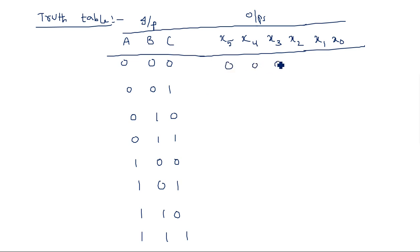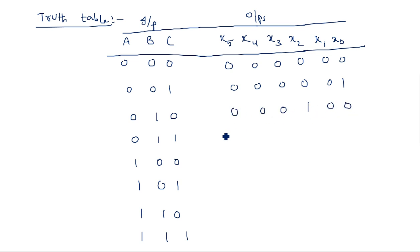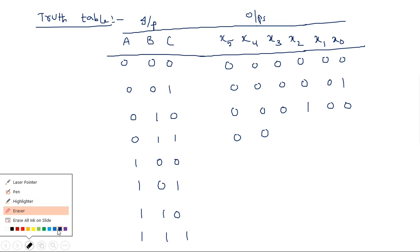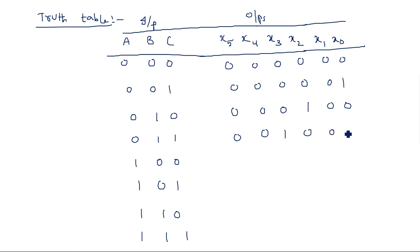0 squared is 0, so all output bits are 0. 1 squared is 1, so the output is 000001. 2 squared is 4, so the output is 000100. 3 squared is 9, so the output is 001001. 4 squared is 16, so 2⁴ is 1 and remaining bits are 0, giving output 010000.